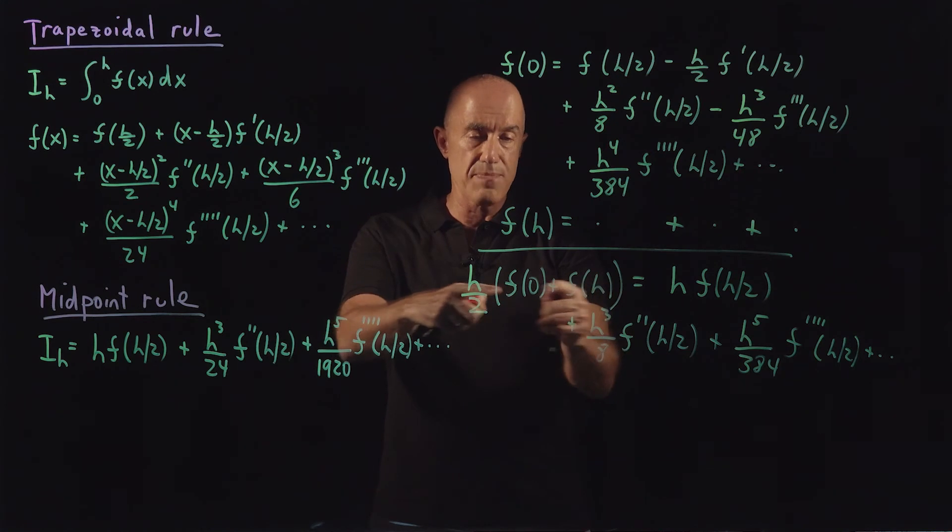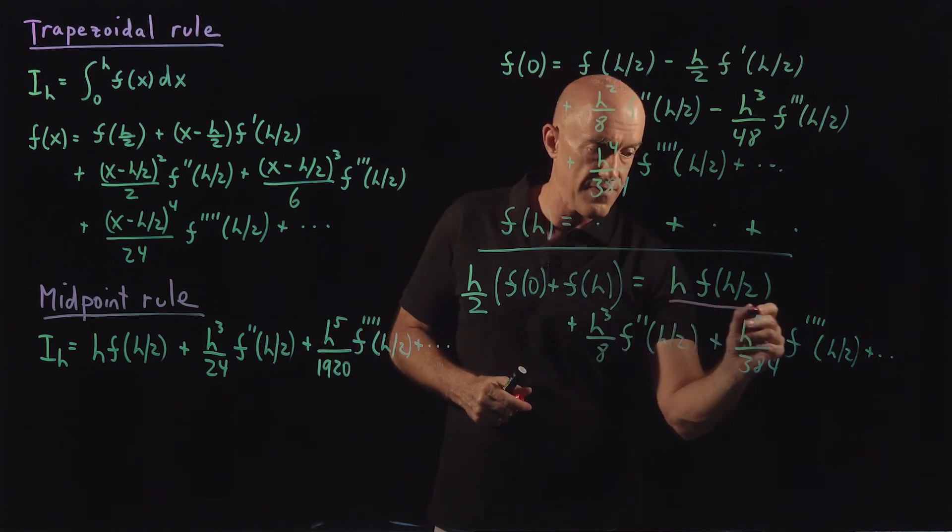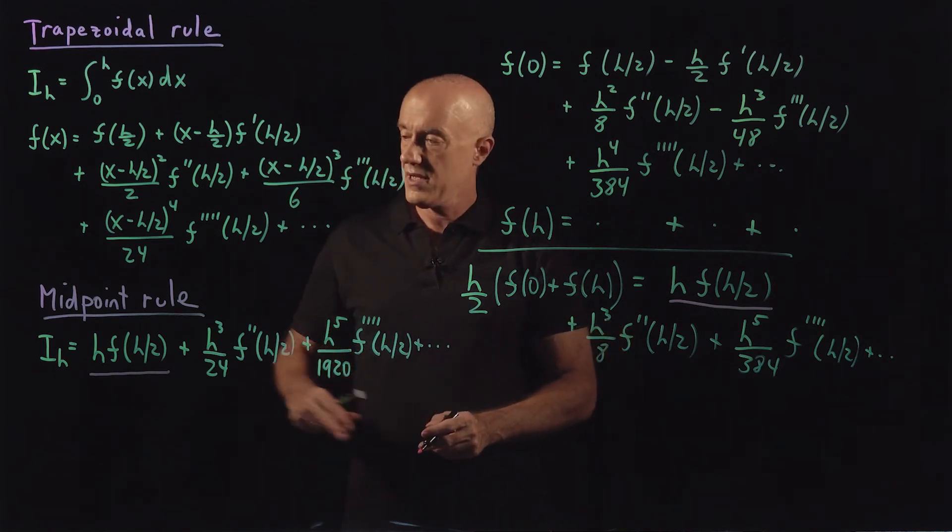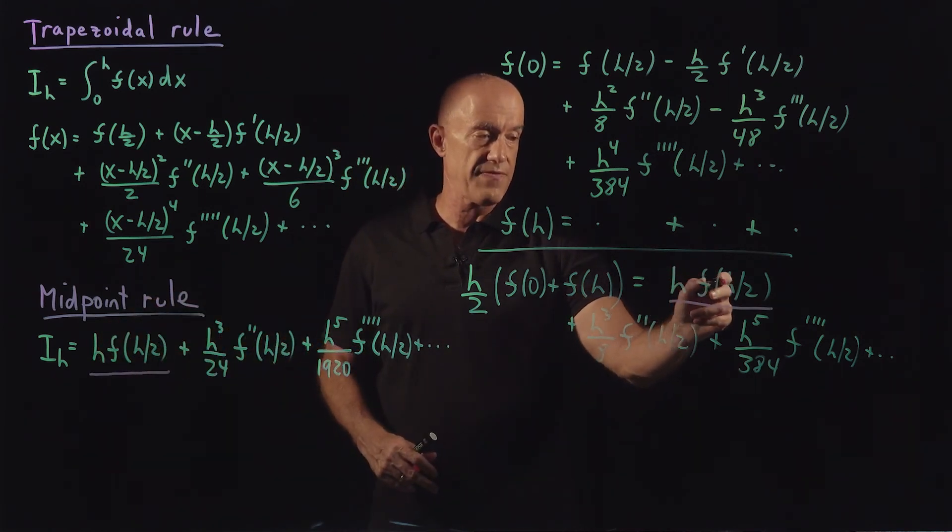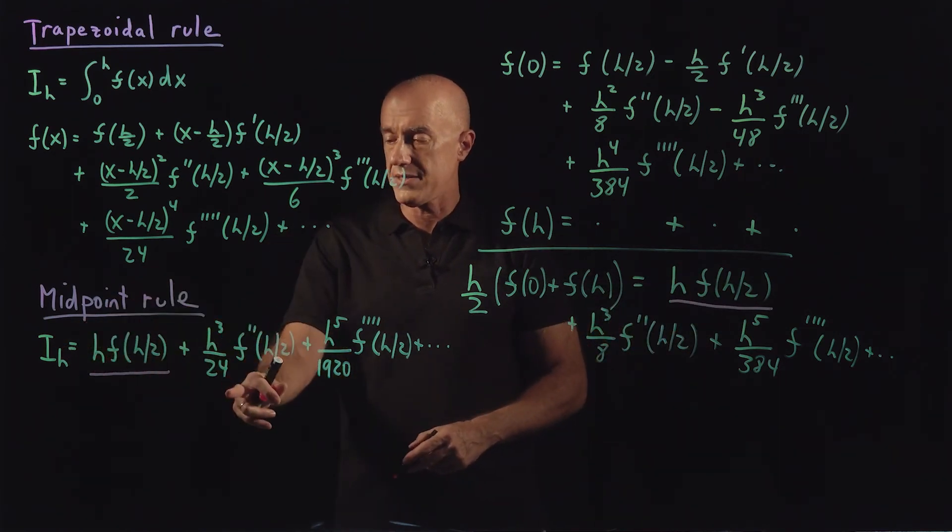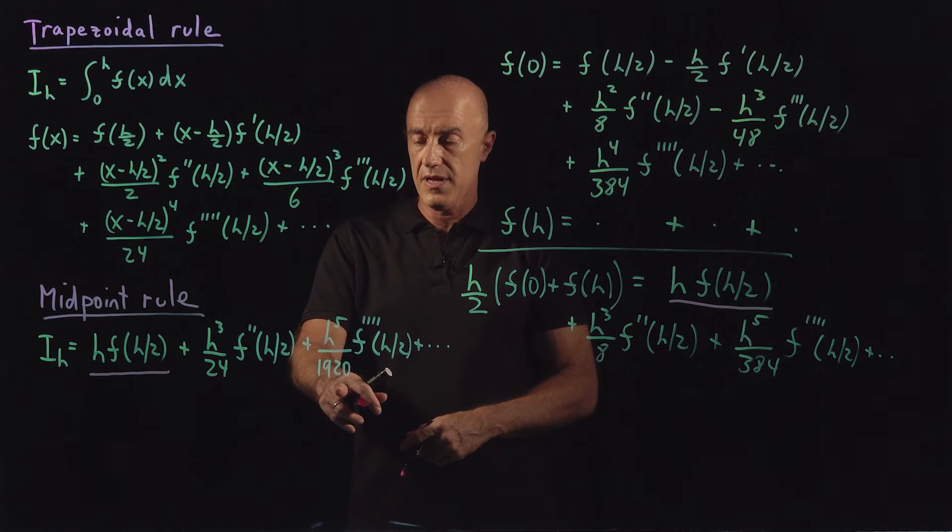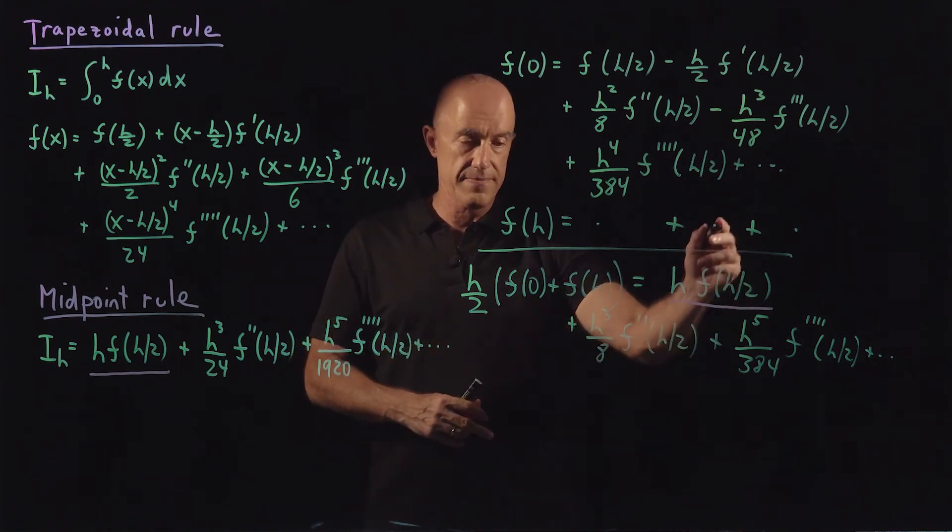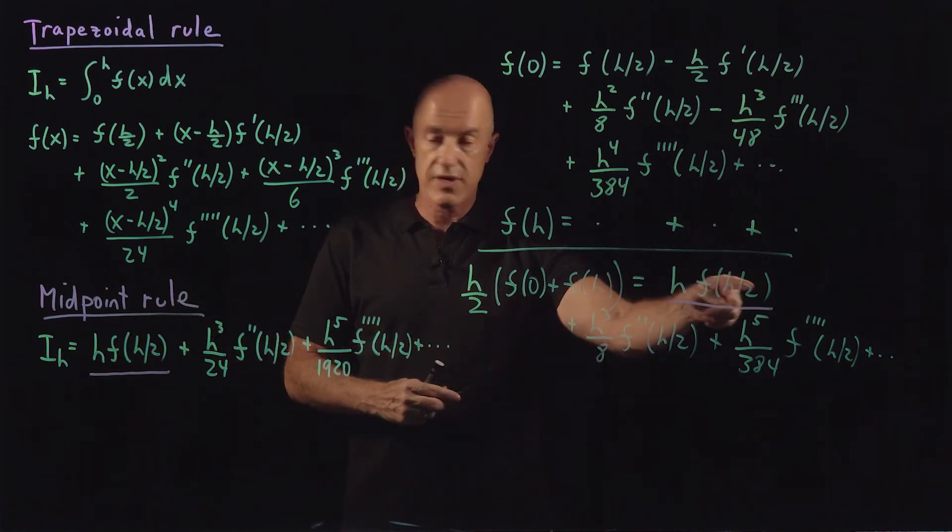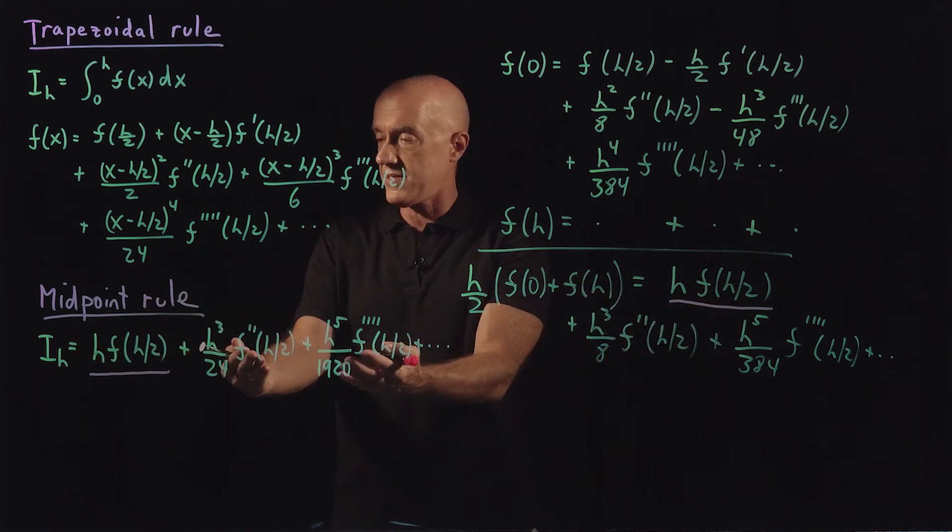This is the trapezoidal rule. So this h times f of h over 2 is just this piece, the leading order term in the midpoint rule. So we can replace h times f of h over 2 by i sub h minus h cubed over 24 f double prime minus h to the fifth over 1920 f fourth. And then rewriting this expression, we can solve for ih. So we replace this one by this one, we plug in ih minus these things, and then we solve for ih.